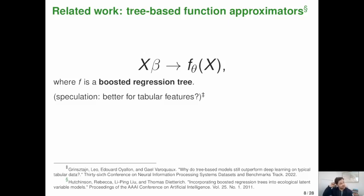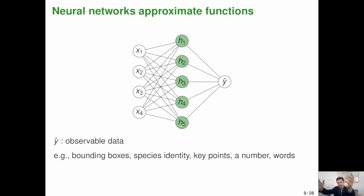I want to make special mention of tree based function approximators in hierarchical models. You know, over a decade ago, Rebecca Hutchinson and her colleagues demonstrated that you could inject a boosted regression tree into an occupancy model and end up with this like sort of hybrid machine learning hierarchical model approach. And just a little bit of speculation like this approach is probably going to be a really good bet if you've got tabular features. Like if the features in X don't have a lot of spatial structure or temporal structure based on what we know about tabular machine learning in general, this approach may be sort of best in class.